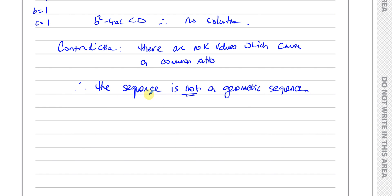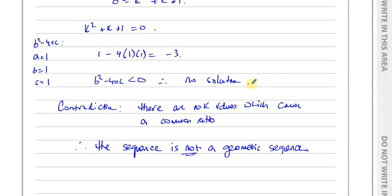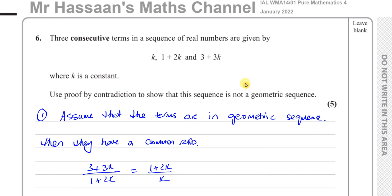So that's what we can conclude. We should write that conclusion. There are no k values which cause a common ratio, therefore the sequence is not a geometric sequence. There's a contradiction there. So that's how you answer such a question.